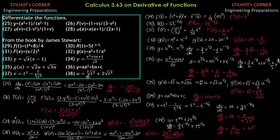Lastly, problem 38: U = ∛(t²) + 2∛(t³). Rewriting: U = t^(2/3) + 2t^(3/2). Differentiating: dU/dt = (2/3)t^(-1/3) + 2·(3/2)t^(1/2) = (2/3)t^(-1/3) + 3t^(1/2). Rewriting with positive exponents: dU/dt = 2/(3∛t) + 3√t. So that's it for this video — this is straightforward, especially for those already expert in differentiating functions.